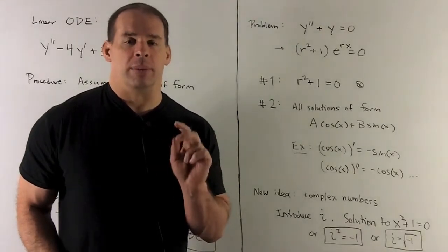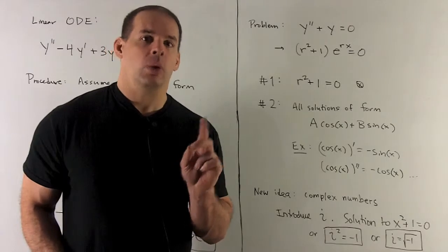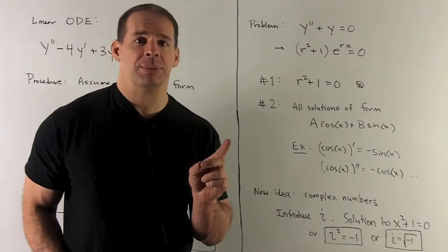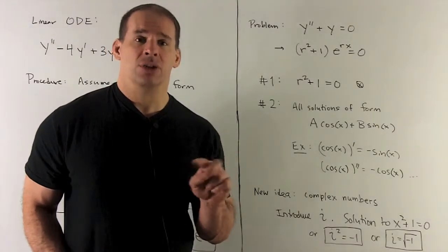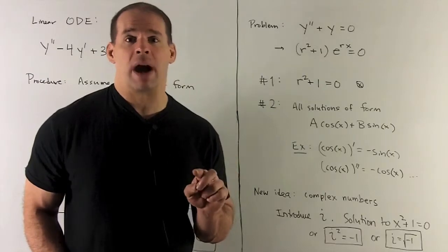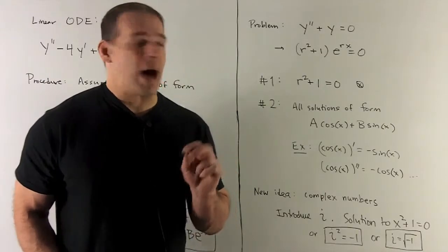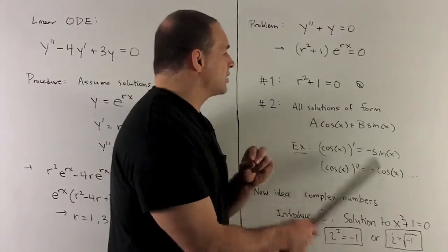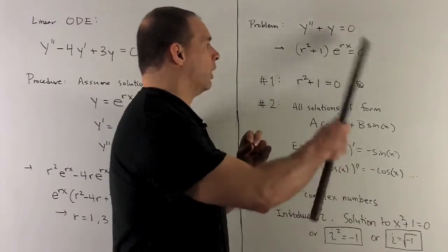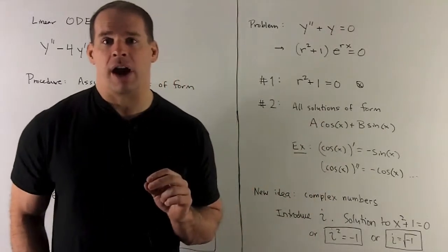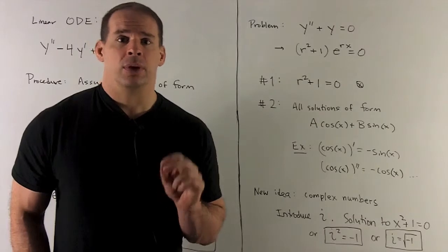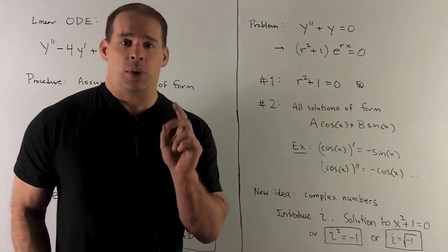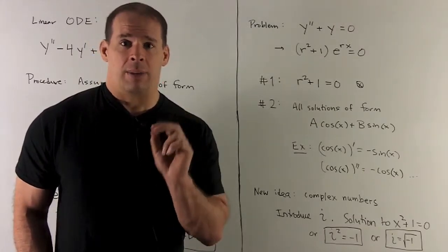Things we want to look at are going to be, what will complex numbers get us? How do we get solutions where we might not have had them otherwise? And also, why do cosines and sines come out when we're starting off with things of the form e to the rx? First, we've got to go through the fundamentals of complex numbers.